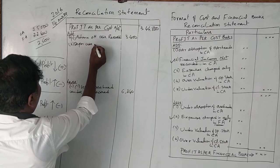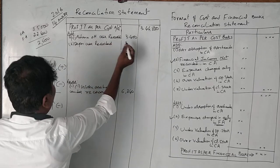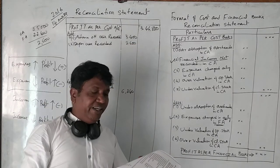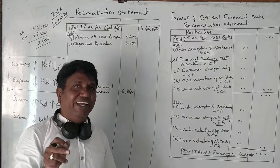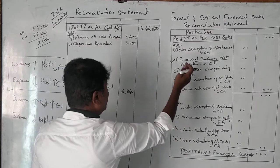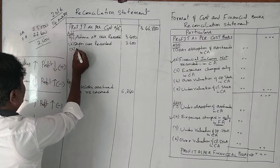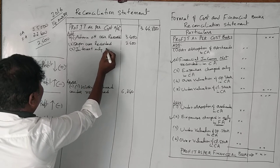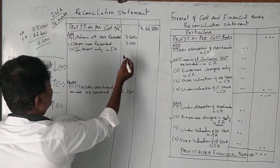Depreciation over-recorded: 2,600 rupees should be taken here. Next, interest is included in financial books only. Interest is essentially income recorded only in FA but not in CA. All income should be added, so interest only in FA: 16,000 rupees.